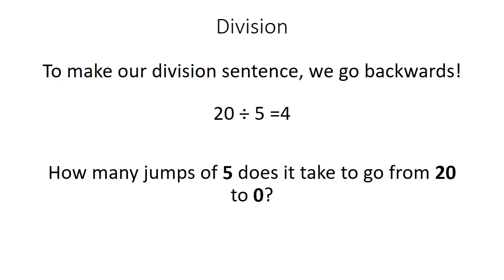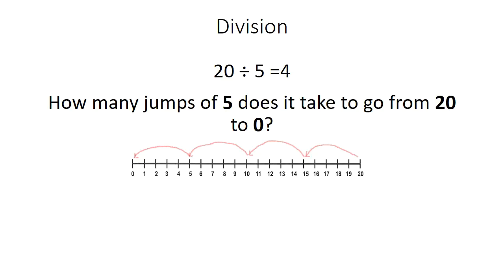To make a division sentence from a number line, we go backwards. 20 divided by 5 equals 4. In other words, how many jumps of 5 does it take to go from 20 to 0? It takes 4.